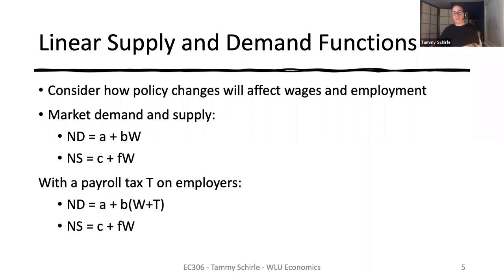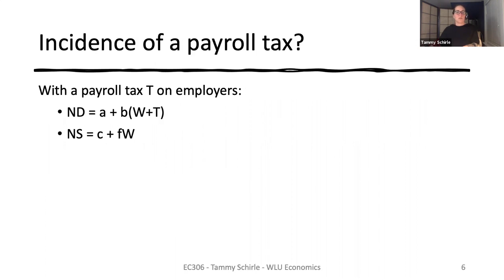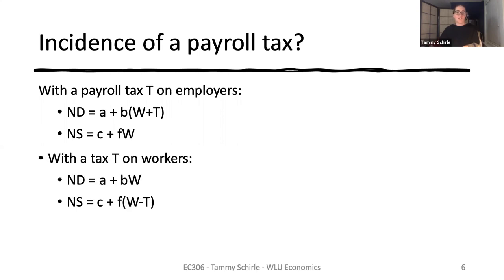We might then introduce a payroll tax of size T, paid by employers for each unit of labor they employ. When we work out the new wages in the market, we'll see that market wages change so that employers reduce the amount they pay workers in response to the payroll tax. One important thing to notice is that the incidence of the tax — in terms of workers receiving lower wages or firms facing a higher unit cost for labor — does not depend on who is responsible for paying the tax to government. If instead of having firms submit the tax, you ask workers to send it in after getting their paycheck, it has the same effect on employment and, ultimately, the take-home pay for workers.